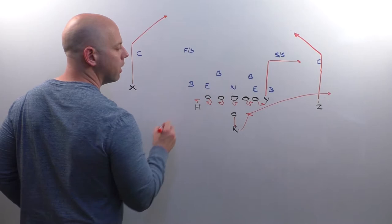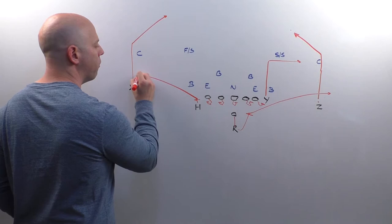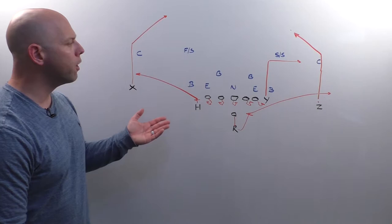Our H back is check release. Okay, so he's going to step up. If the backer doesn't come, if the backer comes, he's going to block him. And then if he doesn't come, we're going to get, again, a four-yard shoot on the check release, getting out there now.